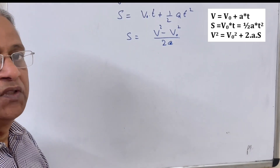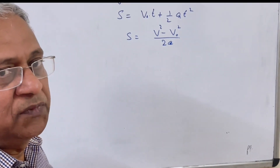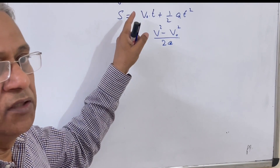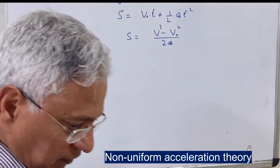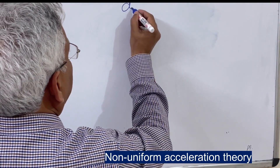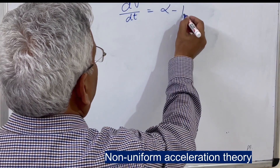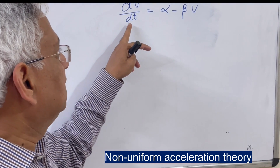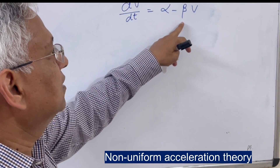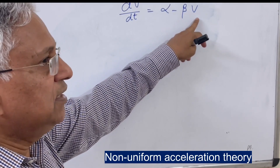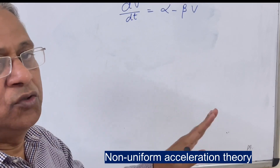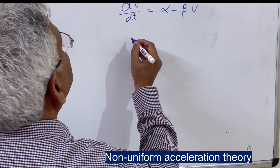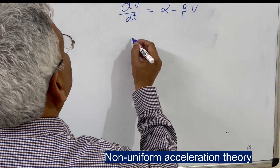In practice, acceleration is high at low speed and low at high speed. Therefore, non-uniform acceleration theory is more practical than uniform acceleration theory. This theory assumes that the rate of acceleration is given by the equation dv/dt = α - βv, where v is the speed and α and β are two constants.